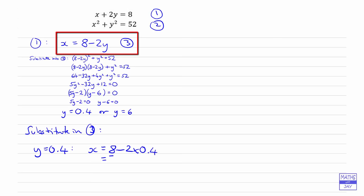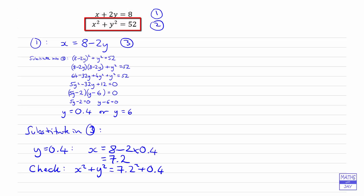It's a good idea to check your answers as you go along. We've effectively used the linear equation here at the end. Let's check in equation 2, so we want to find out what x squared plus y squared is equal to. That's going to be 7.2 squared plus 0.4 squared, and that does indeed come to 52, so that's a good start.